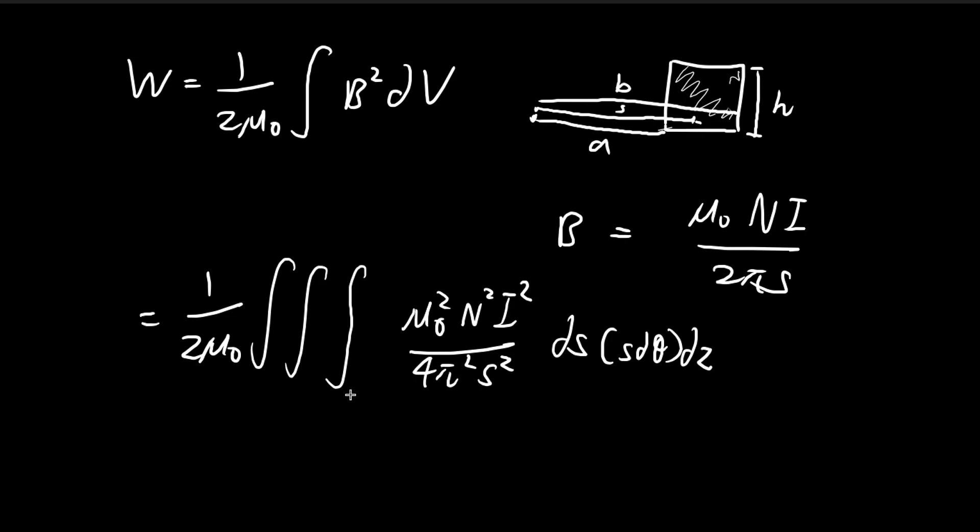ds ranges from a to b, θ ranges from 0 to 2π, and dz ranges from 0 to h. Essentially this whole integral draws out the entire region wrapped around by the coil, which is where the magnetic field is. In all other regions, the magnetic field is equal to 0, so that's why we're integrating along this region.